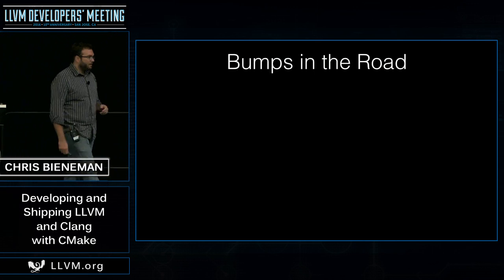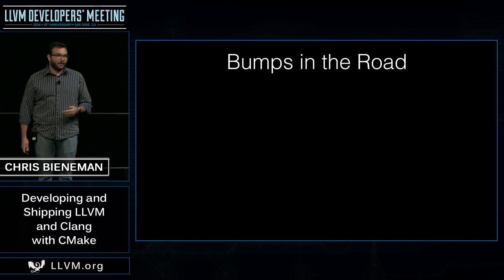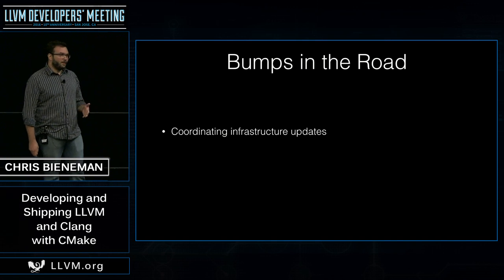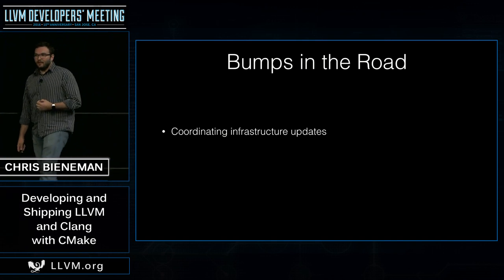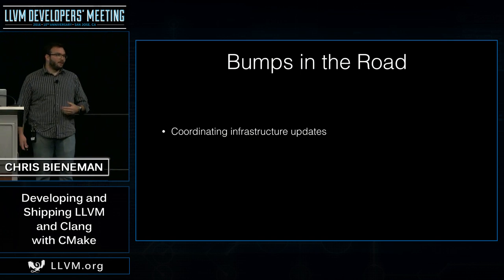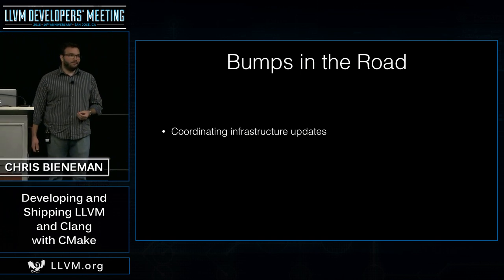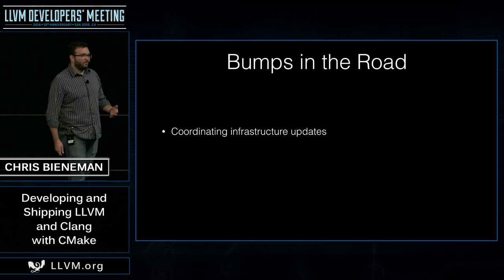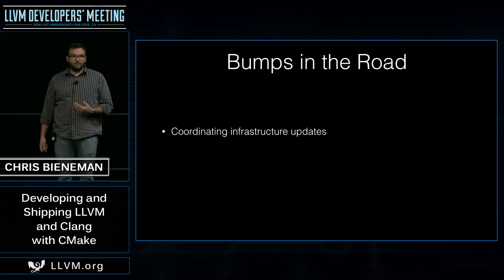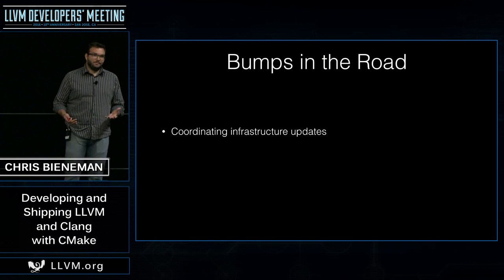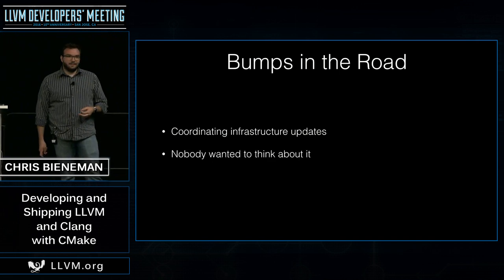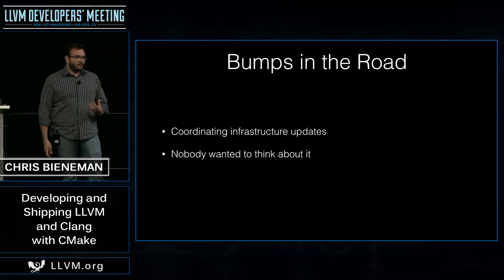When we started the effort to move to CMake, there were some challenges. One of the big challenges is that the build system is touched by everything and everything depends on it. When you're talking about removing a build system and replacing it with another one, everyone has to update their bots, their scripts, their workflows — everything, the whole way down. The reality is we don't have a good mechanism today in LLVM for coordinating these kinds of changes.